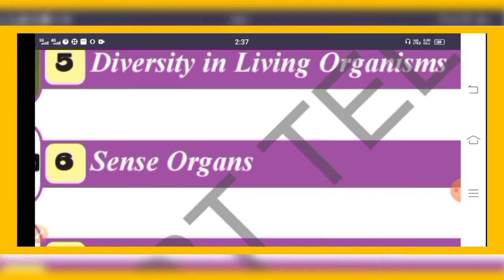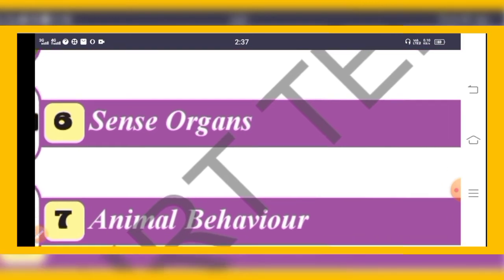The five sense organs are eye, ear, skin, nose, and tongue. Each sense organ carries out two to three functions. Without sense organs, organisms would not survive — living things cannot carry out their metabolic activities and could not respond to their surroundings.